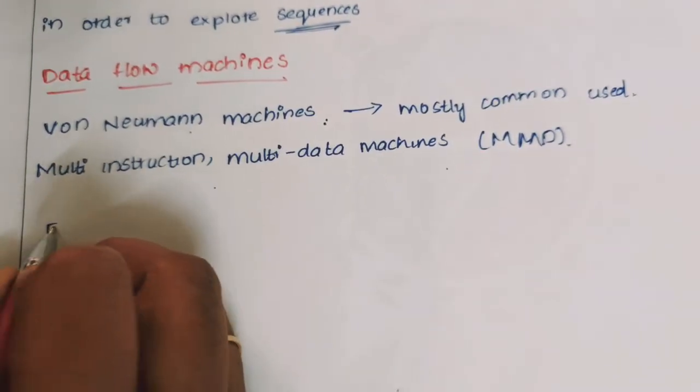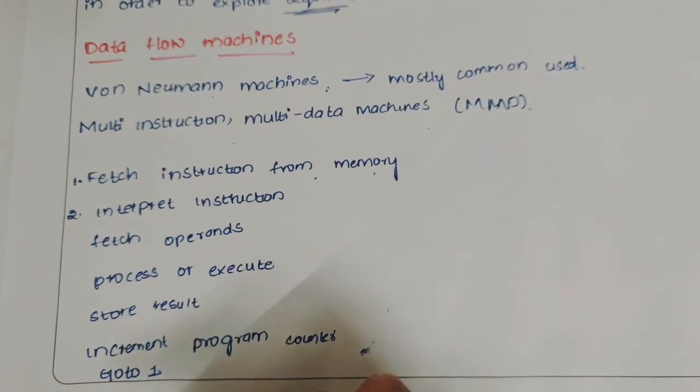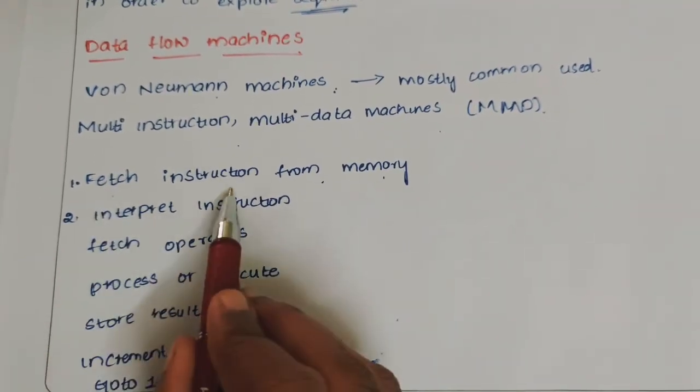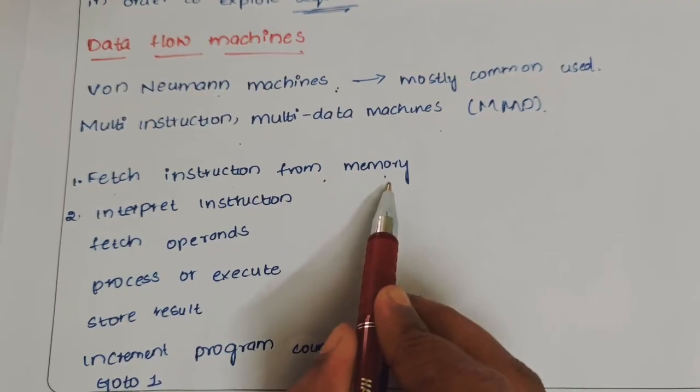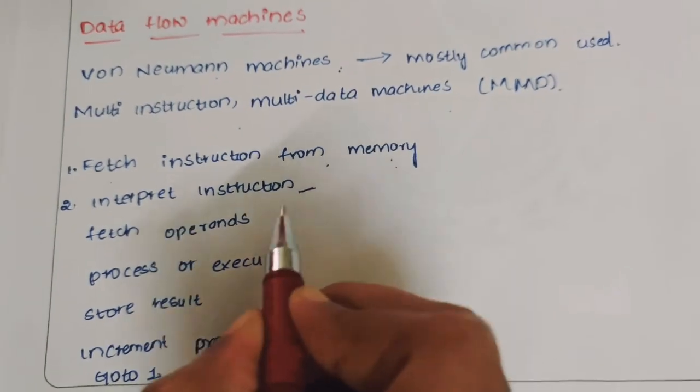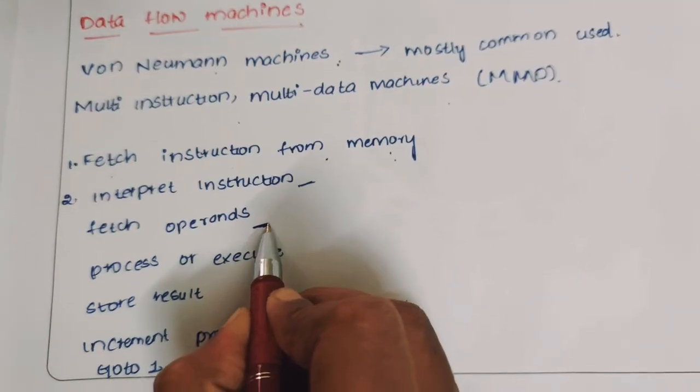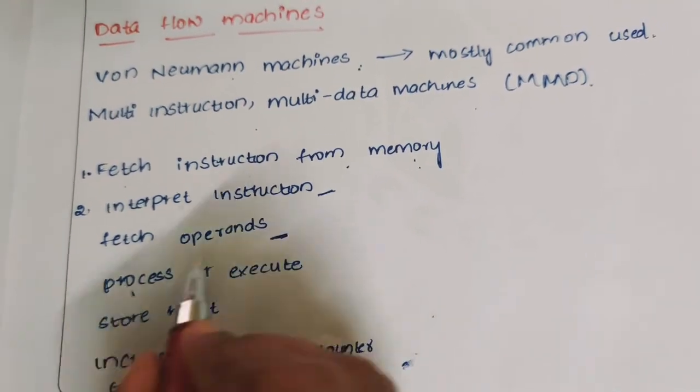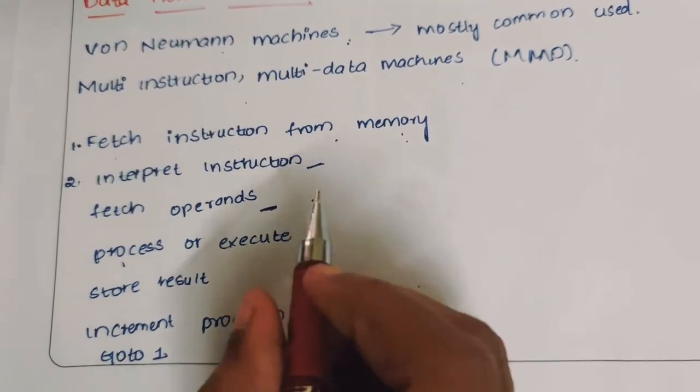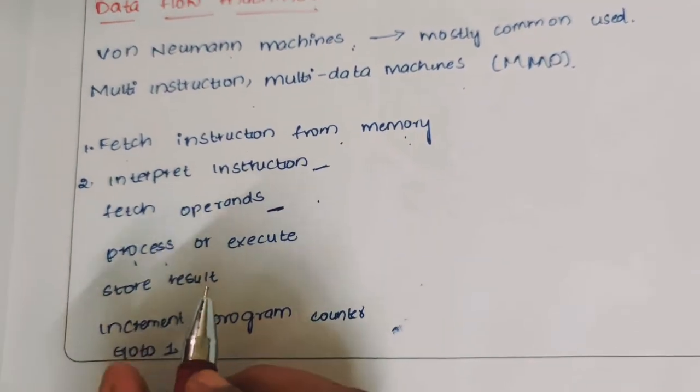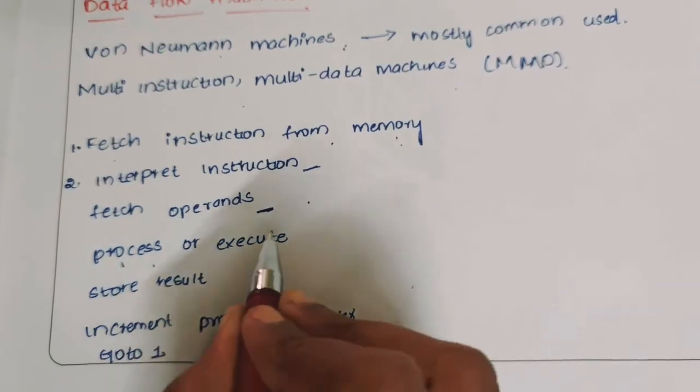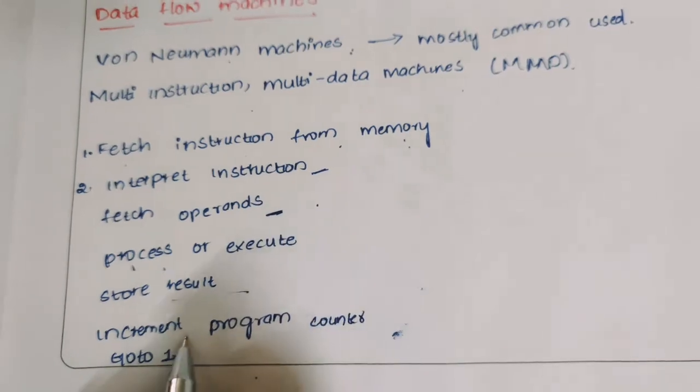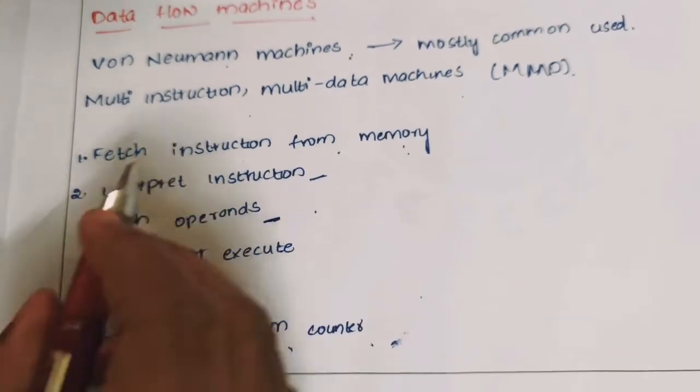The microinstruction sequence is: first, fetch instruction from memory, then interpret the instruction, fetch operands to perform operations, process whatever operands are needed, then store the result in a variable or anything else.